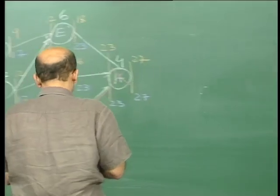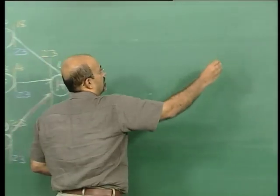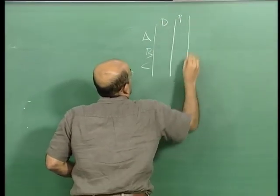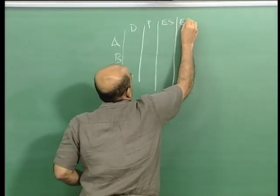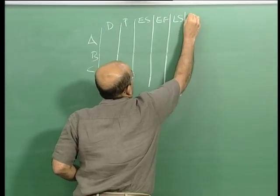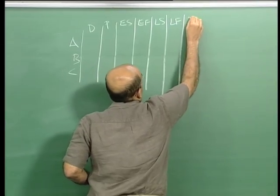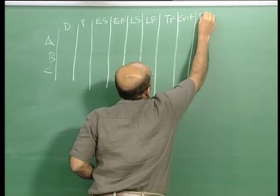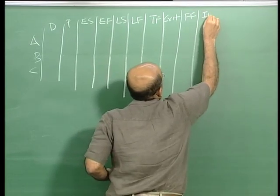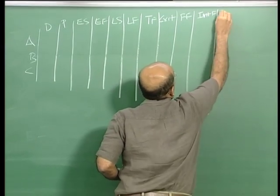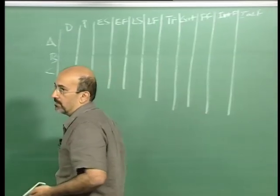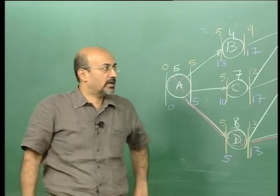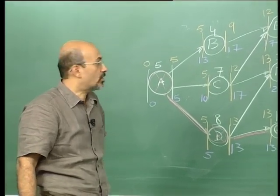You can make the table. We will finally put this in a tabular form where we have A, B, C, D, the duration, the predecessor, early start, early finish, late start, late finish, total float, criticality, free float, interfering float, and independent float. So this will be the table. Once you have done the basic analysis, it gets you back into thinking in terms of the forward pass and backward pass. Let us then discuss the floats.